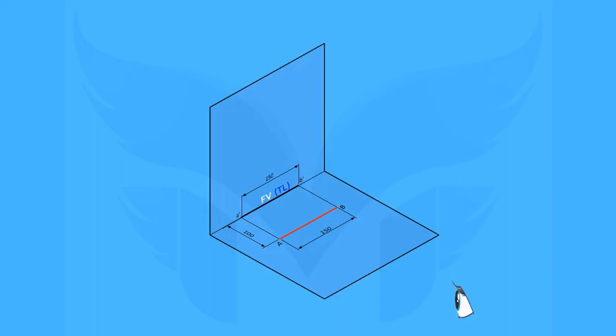Here we have a front view of line AB which appears in a true length of 150 mm. Note that true length means the actual length of a line. Now to project the top view, imagine that you are standing here and looking at the line from top. And as the line is on the HP itself, we just have to replace the capital A and B with small a and b. Connect them to get the top view.